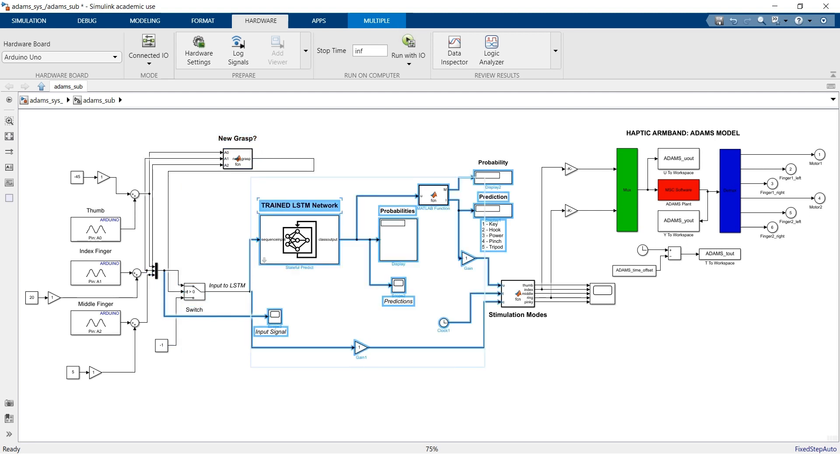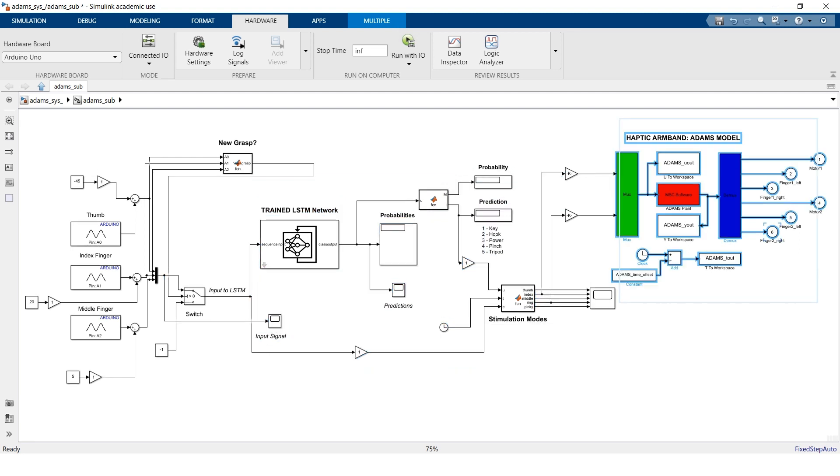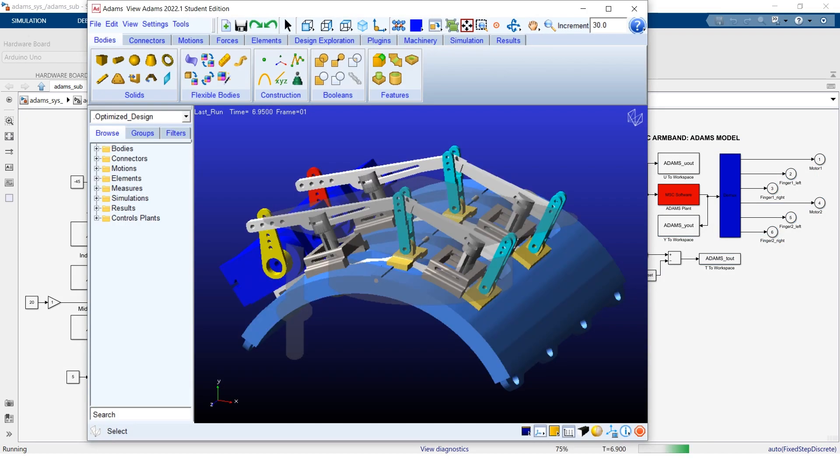The LSTM network itself is making continuous predictions. Once we have a confident prediction we produce a stimulation mode using this MATLAB function and then we send it to an Adams model of the haptic handband.